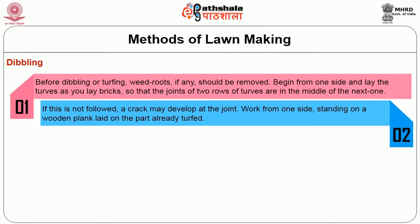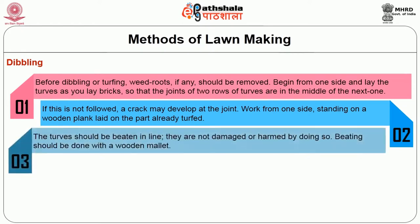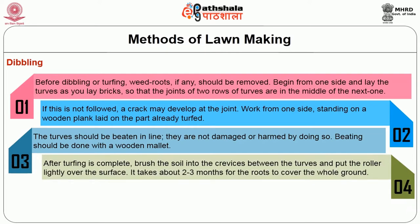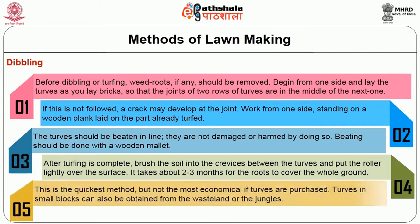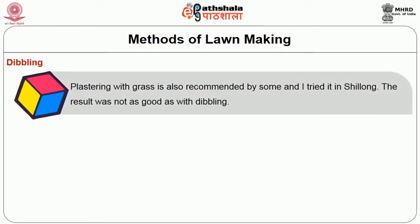Begin from one side and lay the turfs as you lay bricks, so that the joints of two rows of turfs are in the middle of the next one. If this is not followed, a crack may develop at the joints. Work from one side, starting on the wooden plank laid on the part already turfed. The turfs should be beaten in line; they are not damaged by doing so. Beating should be done with a wooden mallet. After turfing is complete, brush the soil into the crevices between the turfs and put the roller lightly over the surface. It takes about 2-3 months for the roots to cover the whole ground. This is the quickest method but not most economical if turfs are purchased; turfs in small blocks can also be obtained from wasteland or the jungles.